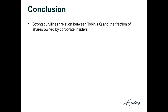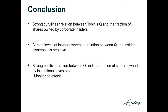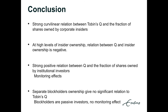We can conclude that there is a strong curvilinear relation between Tobin's Q and the fraction of shares owned by corporate insiders, so at high levels of insider ownership, the relation between Q and insider ownership is negative. Furthermore, there is a strong positive relation between Q and the fraction of shares owned by institutional investors, which can be explained by the monitoring effect that institutional investors tend to perform. We don't see a significant relation between separate blockholder ownership and Tobin's Q, mainly because blockholders are passive investors and don't provide a monitoring effect.